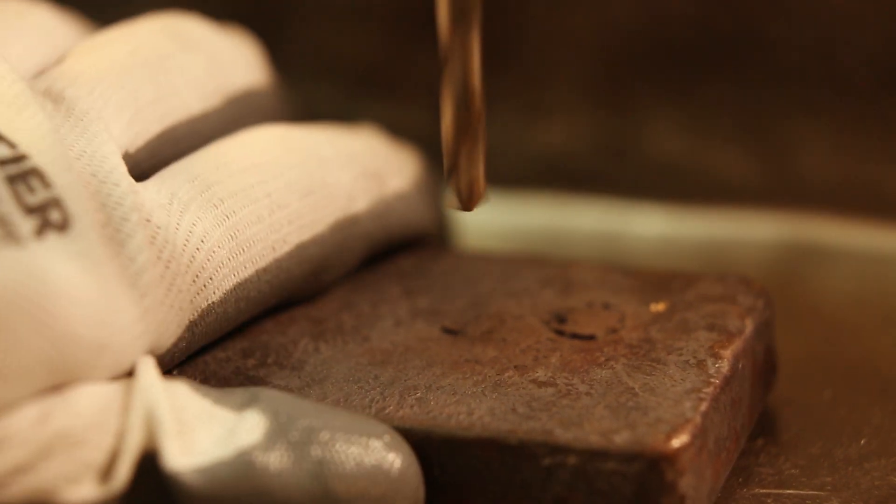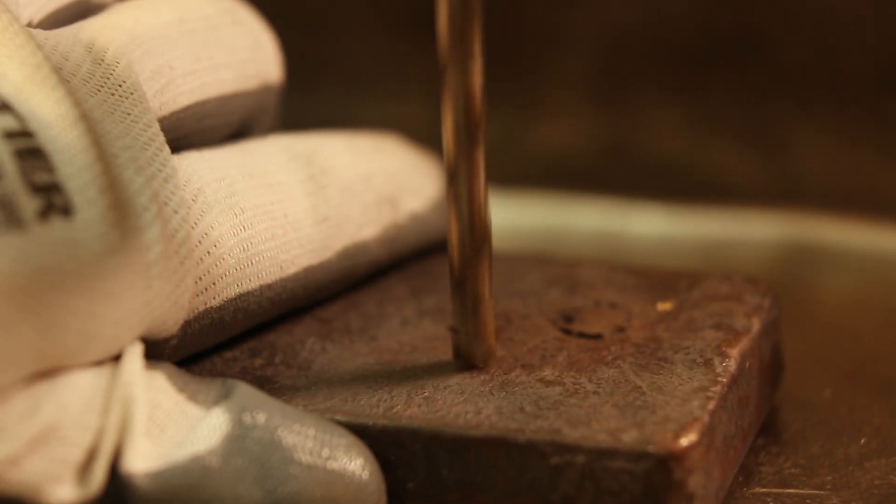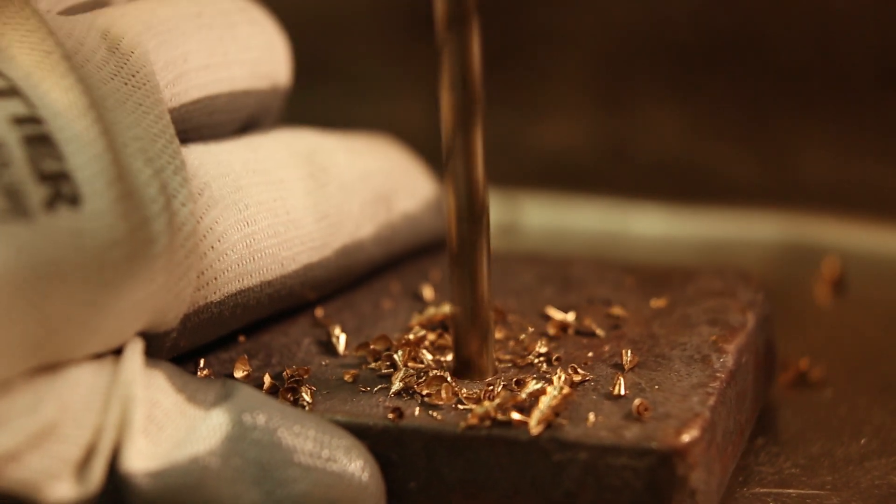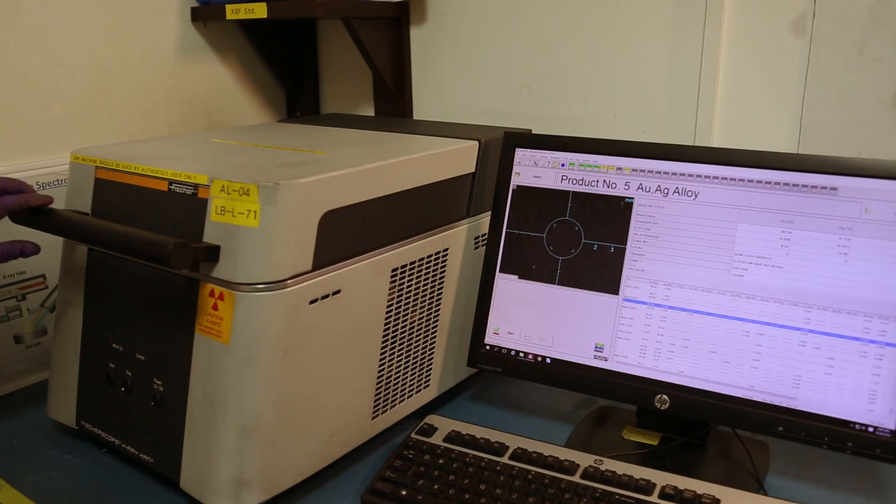A very small amount is drilled off from unrefined gold. It's called dory or scrap and becomes the sample for assaying.